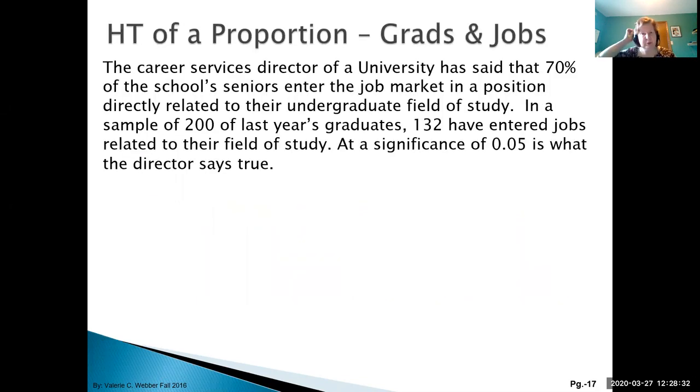Here we have a proportion hypothesis test for grads and their jobs. The career services director of a university said 70% of the school's seniors entered the job market in a field directly related to their undergraduate field of study. In a sample of 200 of last year's grads, 132 entered jobs related to their field of study. At a significance level of 0.05, is what the director says true?